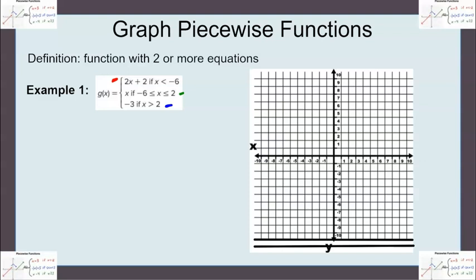So one way of doing this is putting a negative 6 in for x and that would give me 2 times negative 6 is negative 12. Negative 12 plus 2 is negative 10. So it can't be negative 6. So I'm going to put an open circle at negative 6 and negative 10 which would be right here.